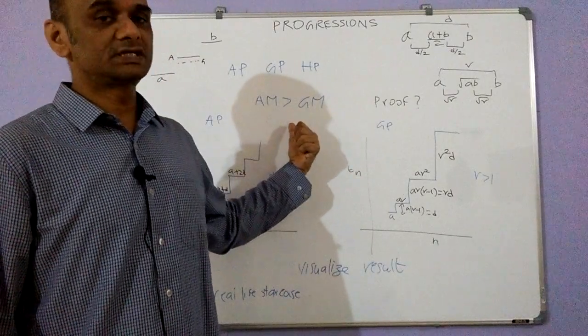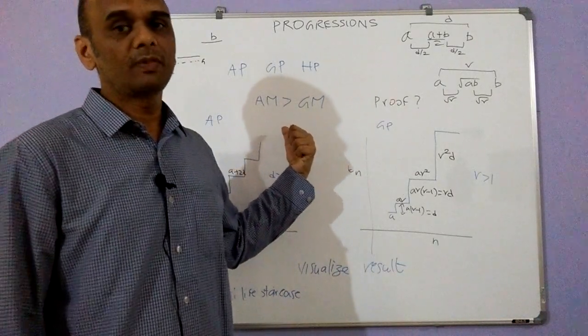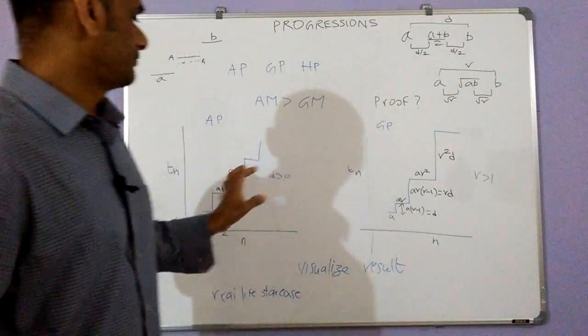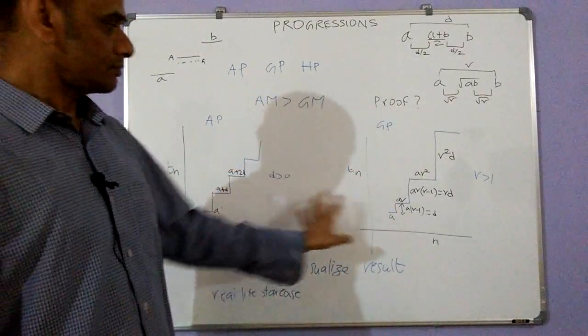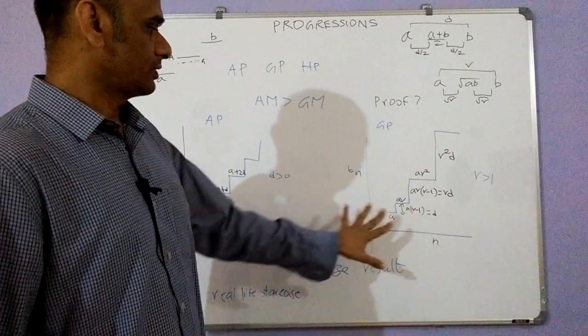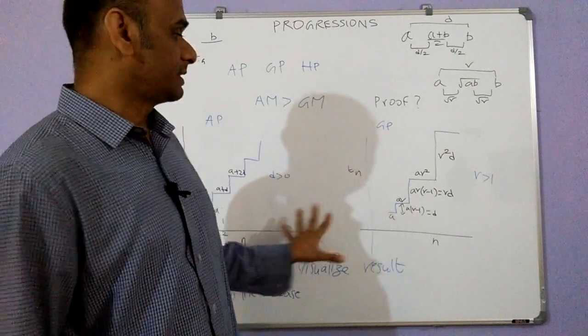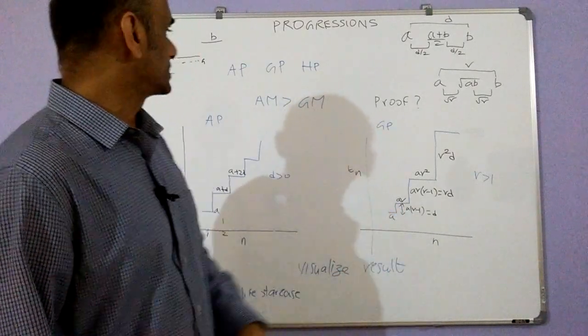Of course, this result can also be proved algebraically. But with this visual understanding of arithmetic progression and geometric progression, we can get an intuitive visual understanding of the AM-GM result.